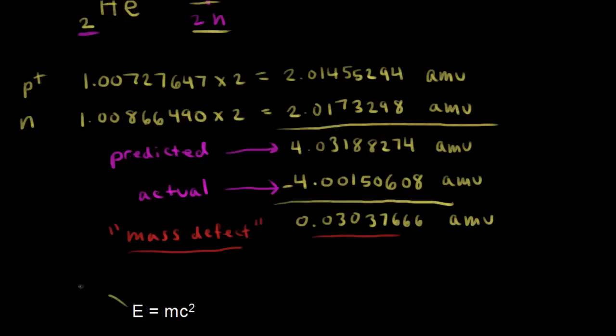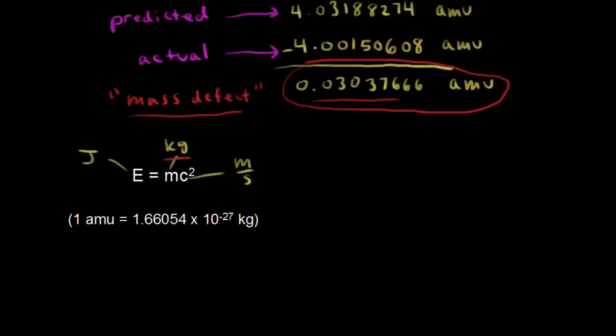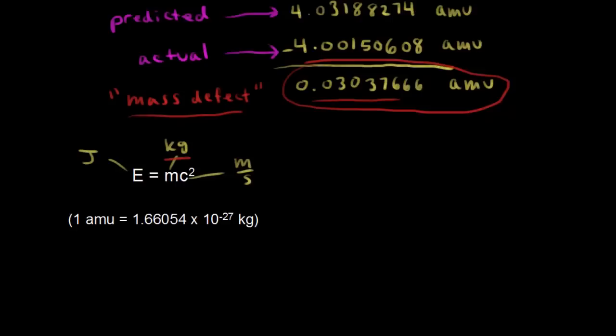E equals MC squared, where E refers to the energy in joules, M is the mass in kilograms, and C is the speed of light in meters per second — so you'd be squaring meters per second to get meters squared over seconds squared. Since we need kilograms and we've calculated the mass in AMUs, we need to convert. One AMU is equal to 1.66054 times 10 to the negative 27 kilograms.